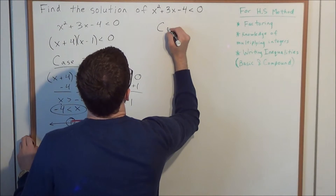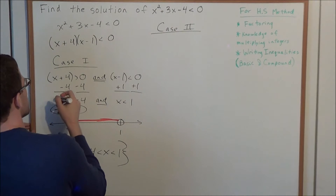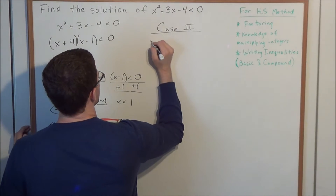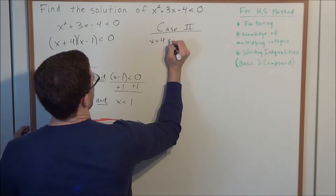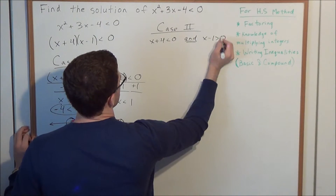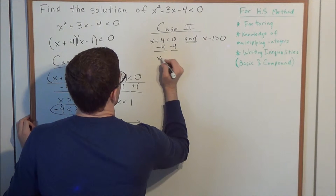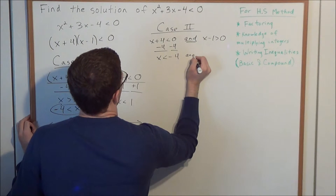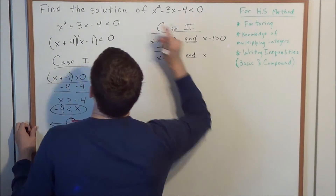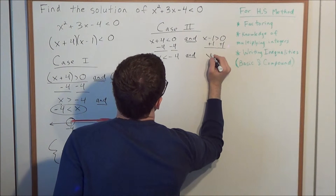Now let's look at case 2 and see why it leads to a contradiction. In case 1, x plus 4 was greater than 0 and x minus 1 was less than 0. Now we alternate: x plus 4 is less than 0 AND x minus 1 is greater than 0. Subtracting 4 from both sides gives x is less than negative 4. Adding 1 to both sides of the second inequality gives x is greater than 1. Keep in mind both need to be true simultaneously.